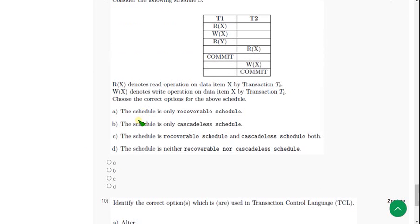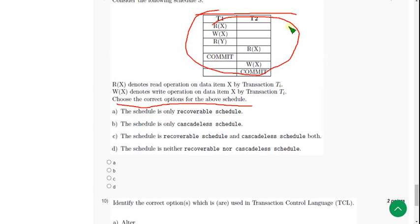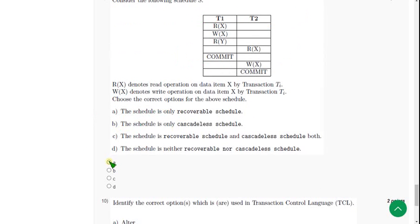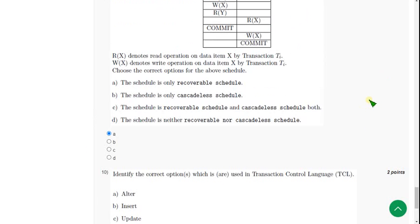Ninth question: choose the correct option for the above schedule. The probable answer is Option A: the schedule is only a recoverable schedule. Mark Option A as the correct answer for the ninth question. Let's move on to the final question — the tenth one.